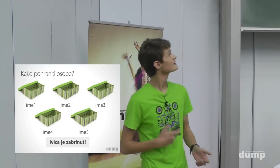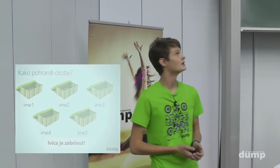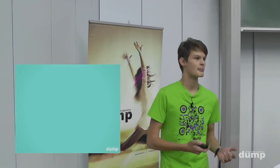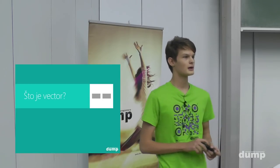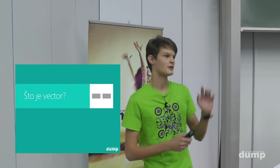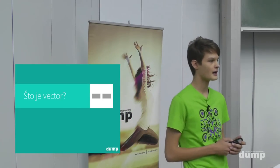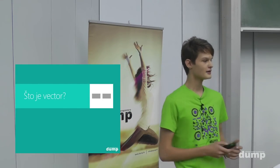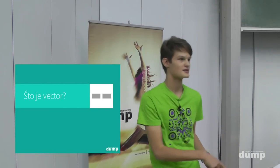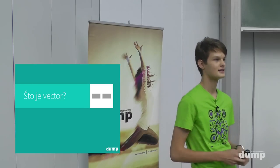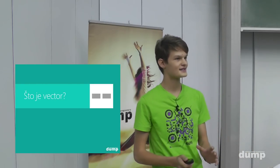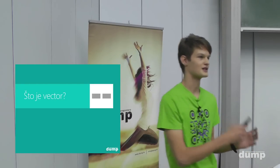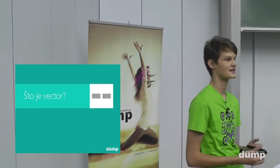Rješenje za Ivičin problem su kolekcije — konkretno, najjednostavnija kolekcija tipa vektor. Sada nam treba pet dobrovoljaca iz publike koji će izaći ispred i pomoći mi objasniti što je to vektor, odnosno kolekcija.